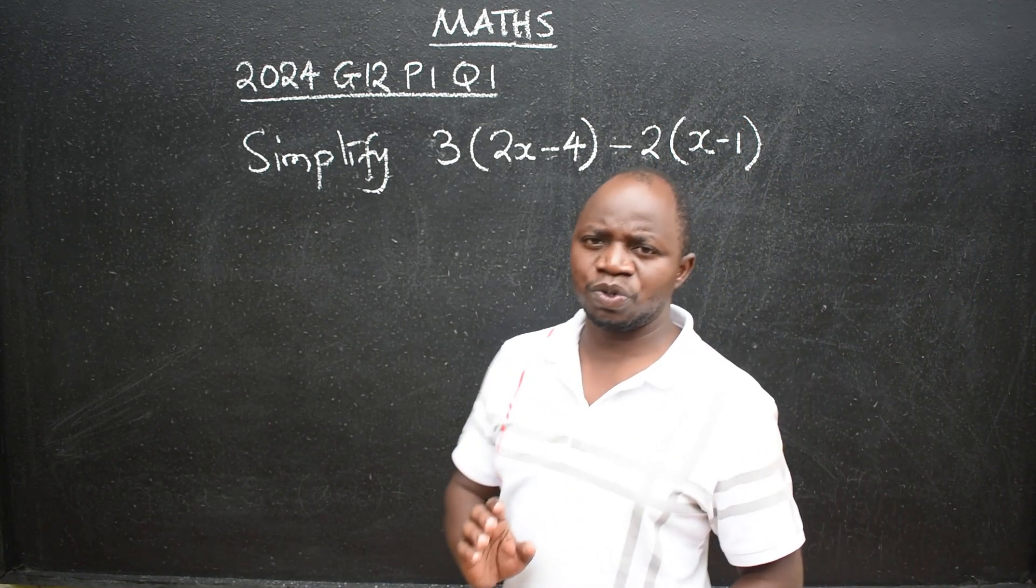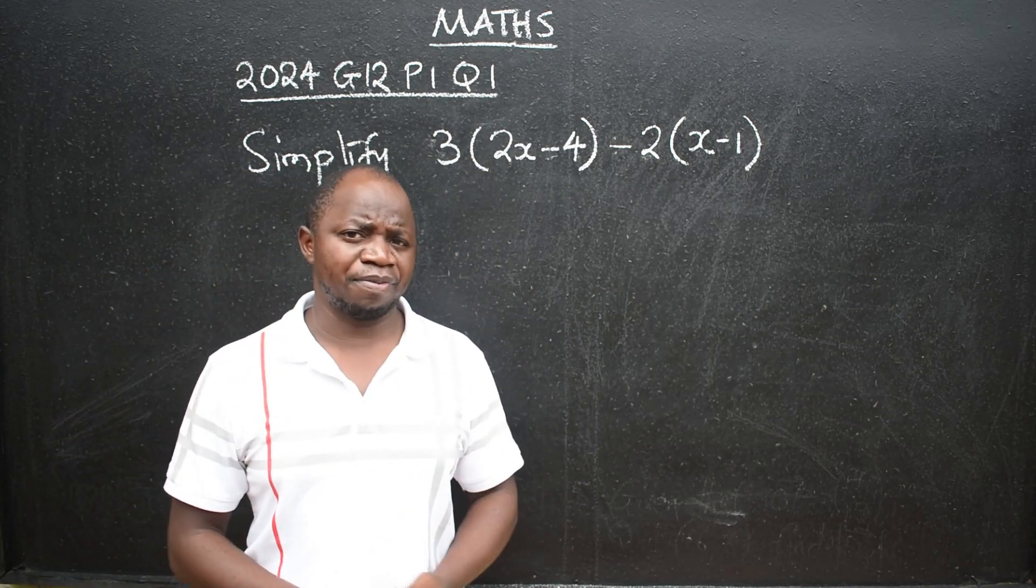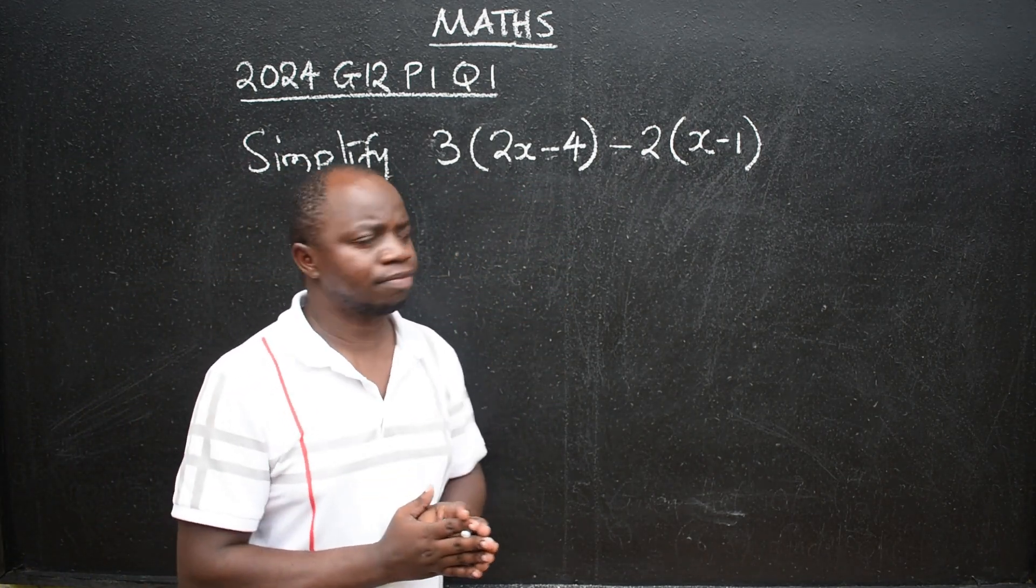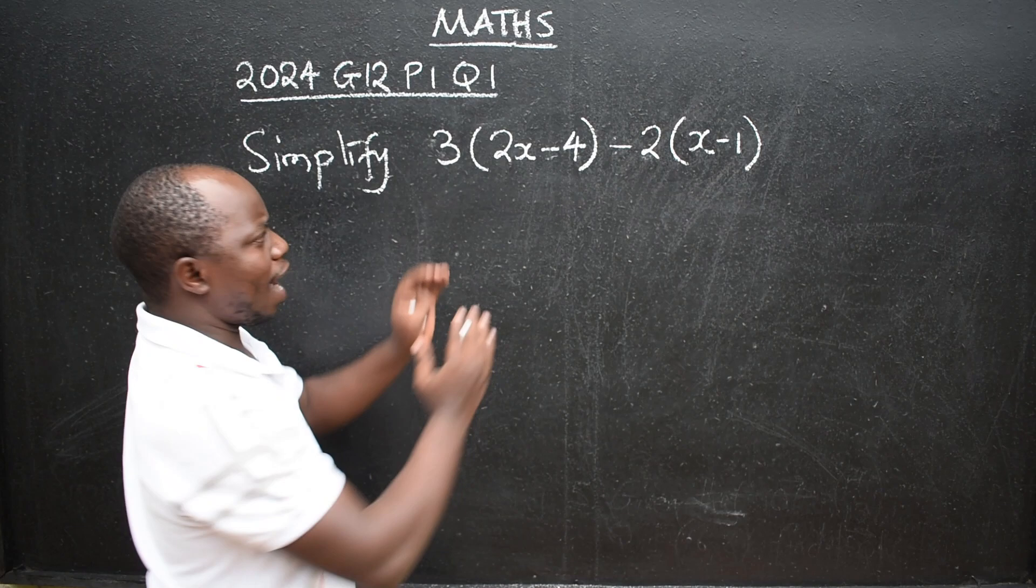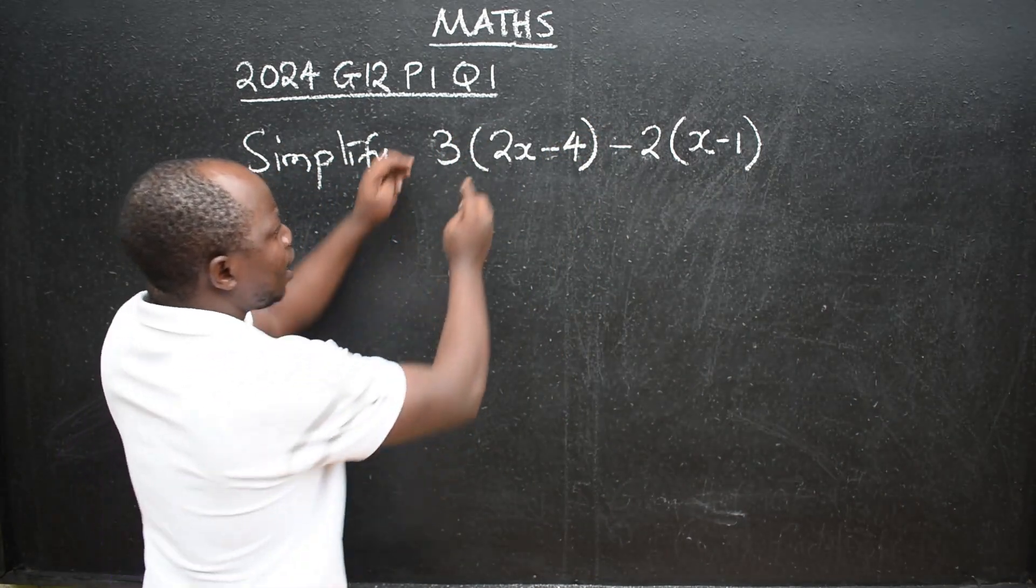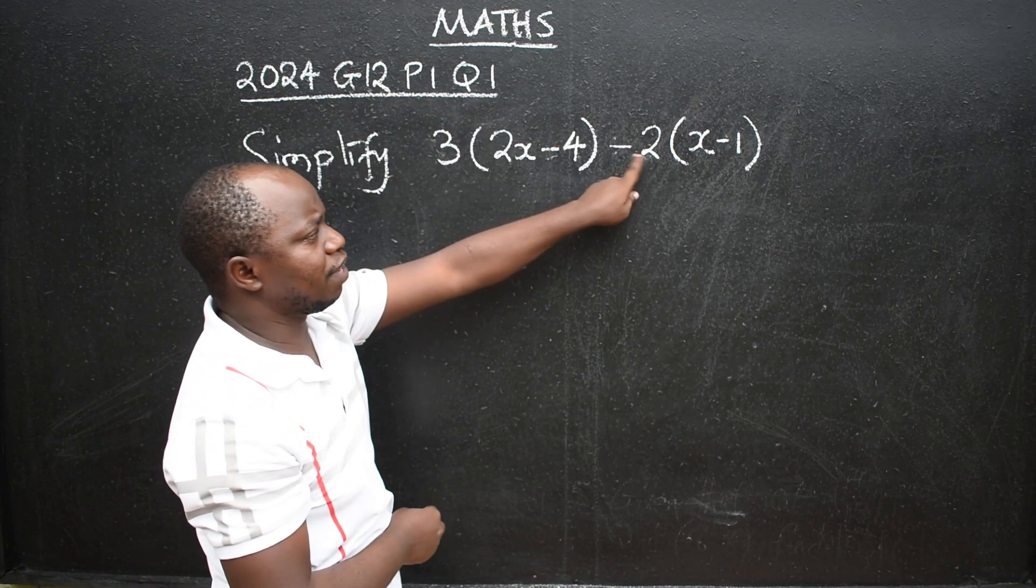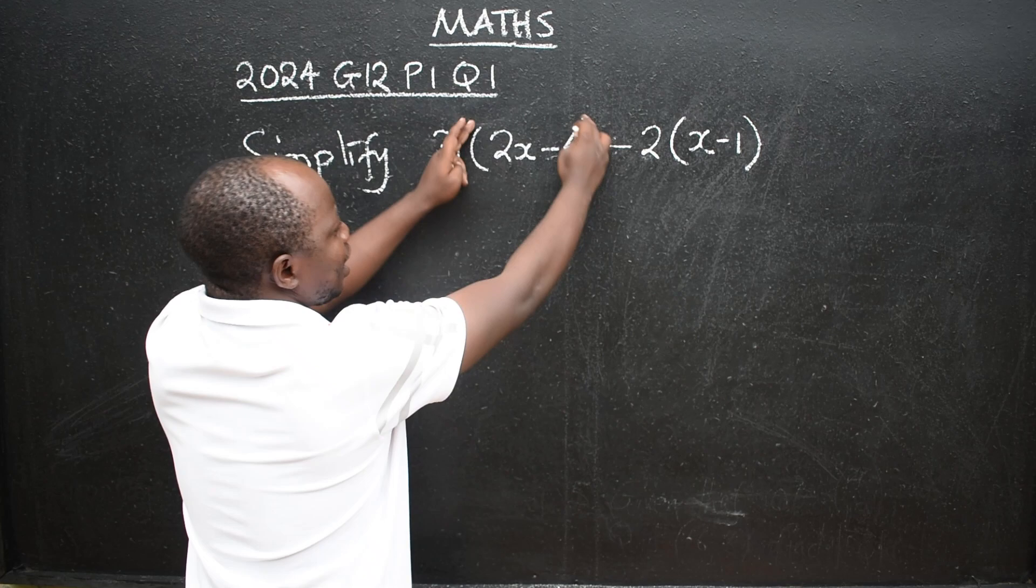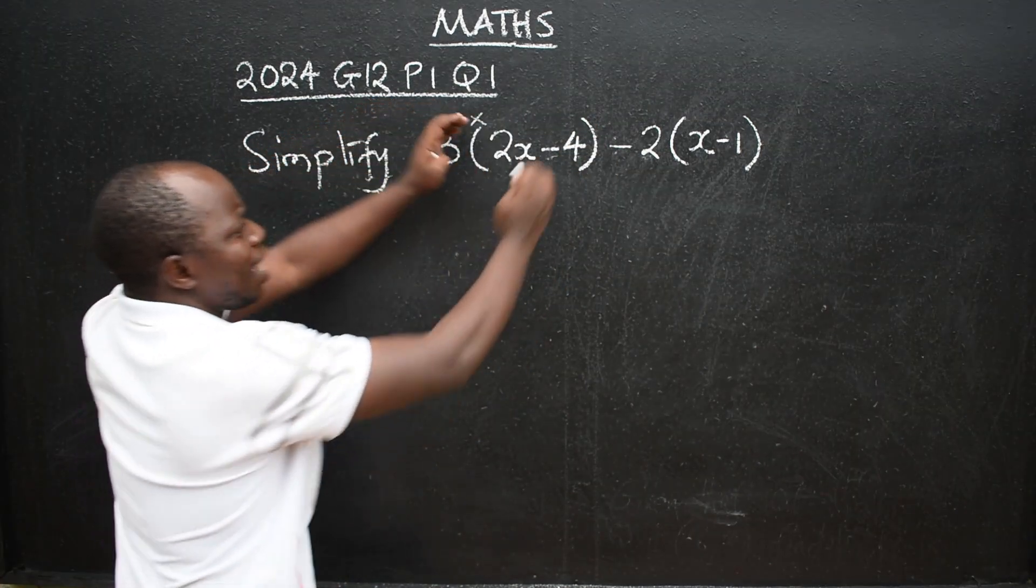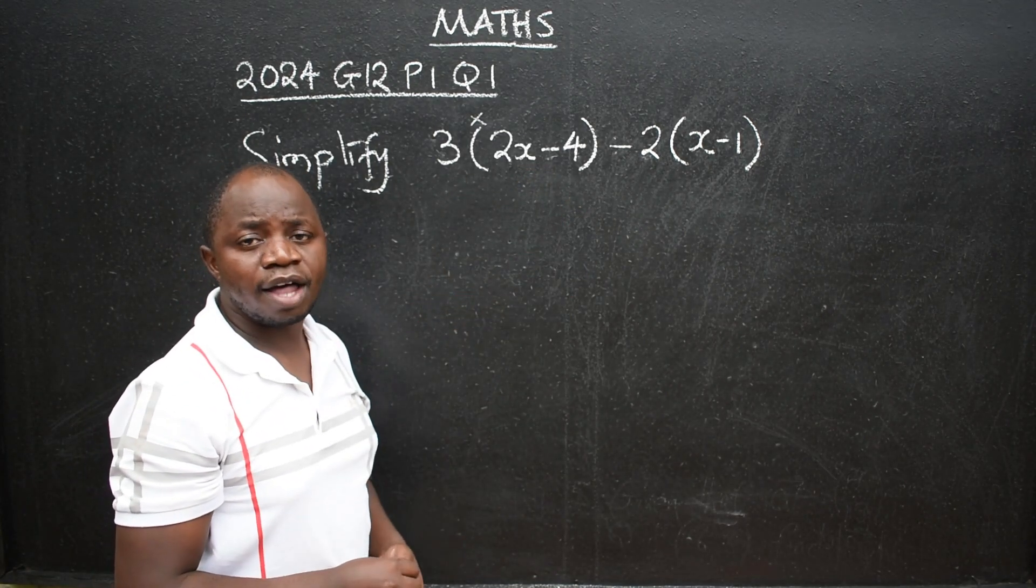What have we been told to do? To simplify. The question is from a topic called algebra. You are told to simplify to shorten the number of terms. If you look at the question, we have brackets. You have to get rid of the brackets. How? Outside the brackets we have a number. In this case, 3. Here we have negative 2. It means to get rid of the brackets, you have to multiply this number outside by everything that is inside. That is how you remove the brackets.